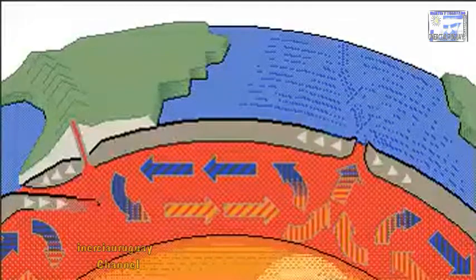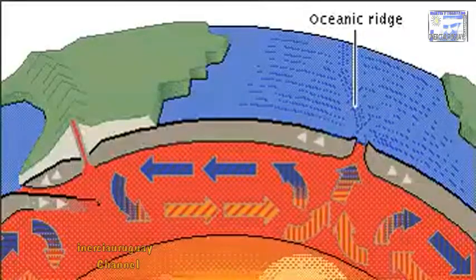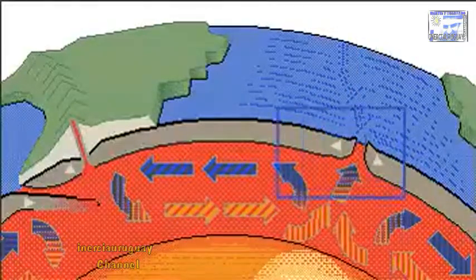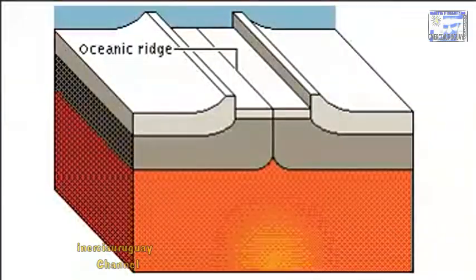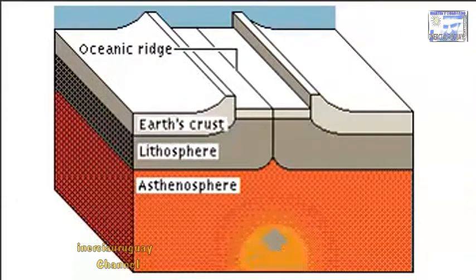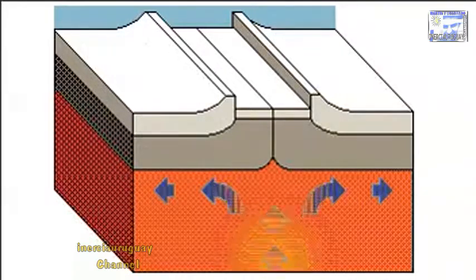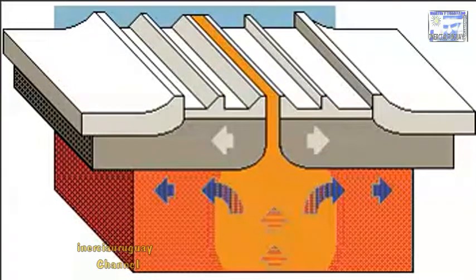Some regions in the Earth's mantle are hotter than others. Heated material rises, and upon reaching the top of the asthenosphere, the material spreads out. Plates of the lithosphere, riding on top of the moving material, move apart.